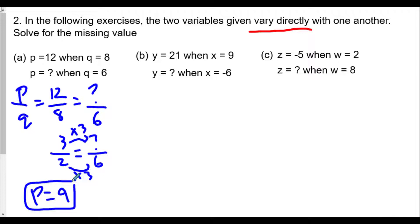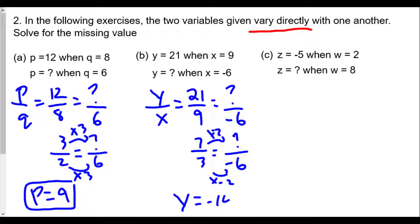For b, y equals 21 when x equals 9. So I have y over x is the ratio of 21 over 9, and that's equal to the unknown value when x is equal to negative 6. Well, 21 over 9, again, that can be simplified. So we have in this case, divide top and bottom by 3 and get 7 over 3. Now, my denominator for the second one is negative 6. So 3 times negative 2. So I multiply top by negative 2. So the unknown value in this situation will be negative 2 times 7. So y will equal to negative 14.